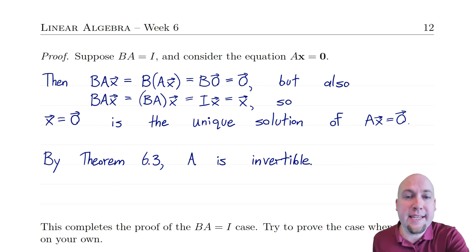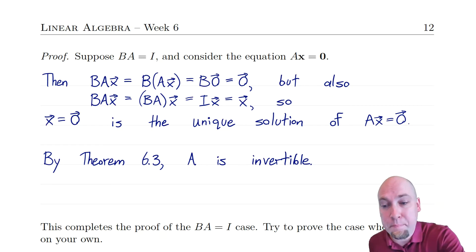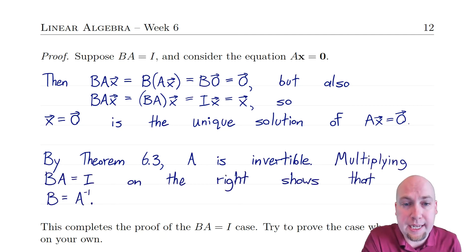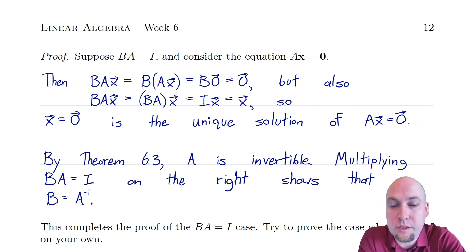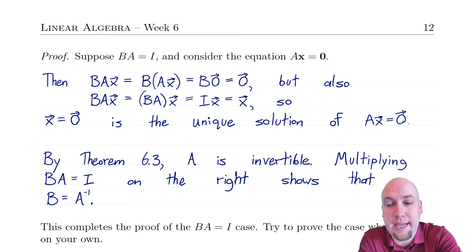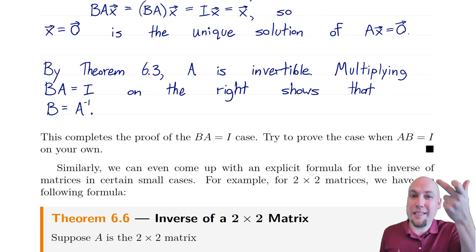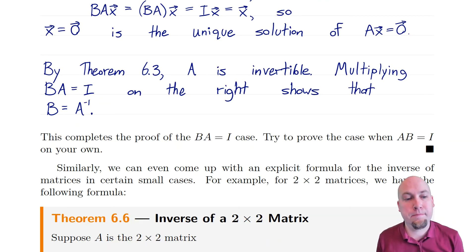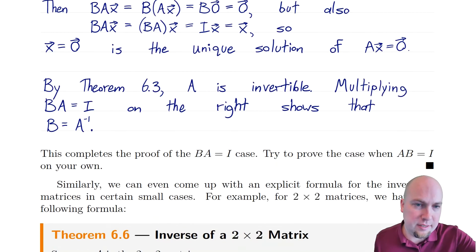We haven't quite shown that B is the inverse yet, but fortunately we can do that easily now. Now that we know A is invertible, we can multiply A by its inverse. I'll take this equation BA equals I and multiply on the right by A inverse, now that I know it exists. The A and A inverse cancel, leaving us with B equals A inverse. So just multiply on the right by A inverse and you find that B equals A inverse, and you're done. We've shown A is invertible and B really is the inverse, based on just that one-sided product.